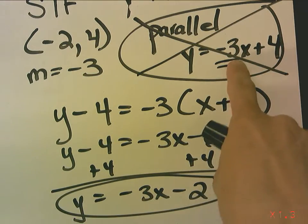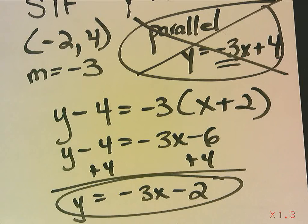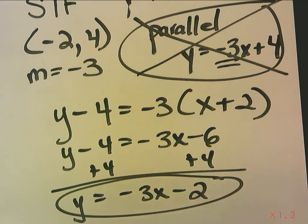So my answer is y equals negative 3x minus 2. Okay, and notice, negative 3x, negative 3x, they have the same slope but a different y-intercept, so they are indeed parallel.